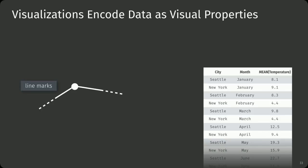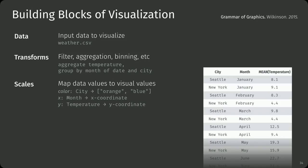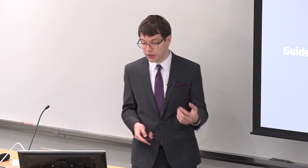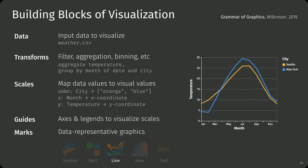For the chart we've seen before, we take the city field and map it to color, creating one line per city with a different color; we map month to the X position and average temperature to Y. To express this in the Grammar of Graphics, we need scales — functions that map from the data domain to the visual domain — guides, which are visualizations of these scales (an umbrella term for axes and legends), and marks, which are the data-representative graphics. You could use points, lines, or areas; for this one we use a line to make a line chart.